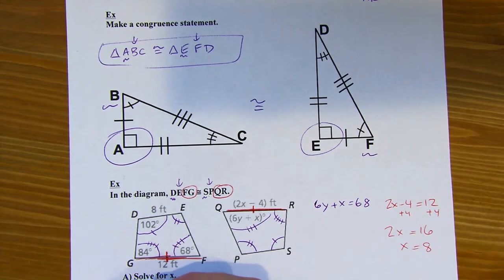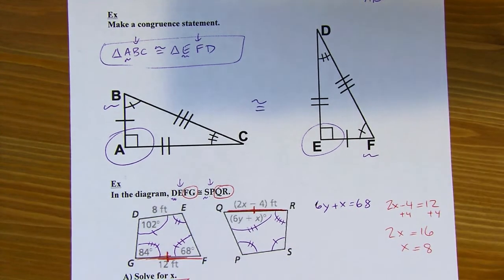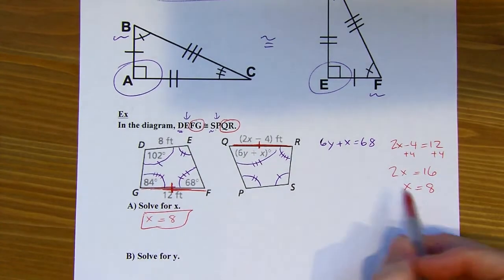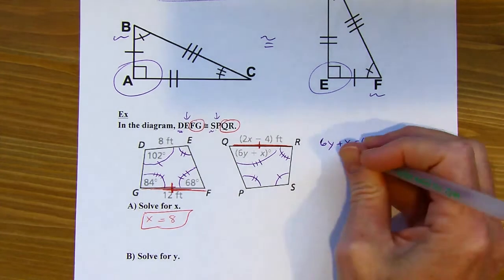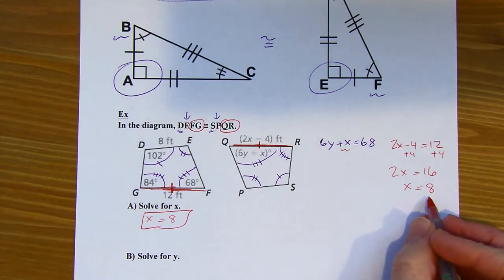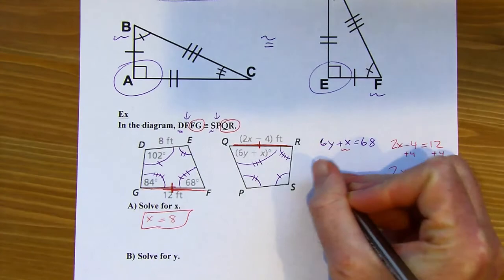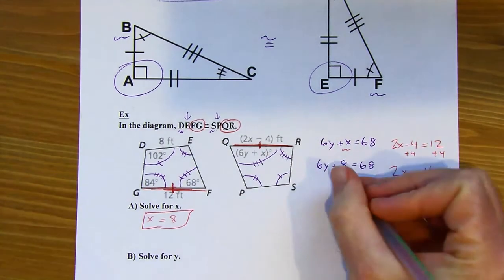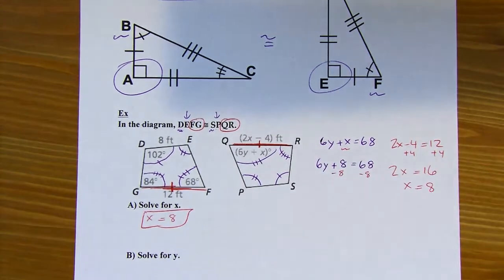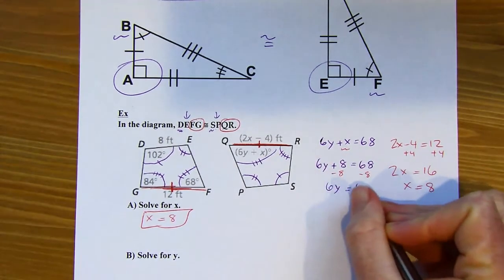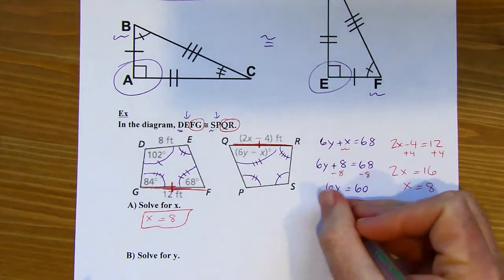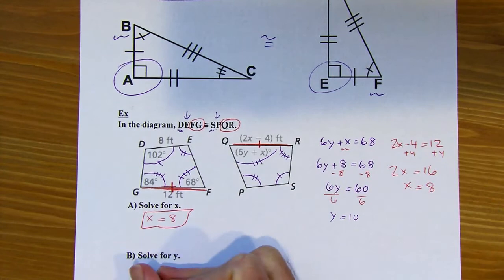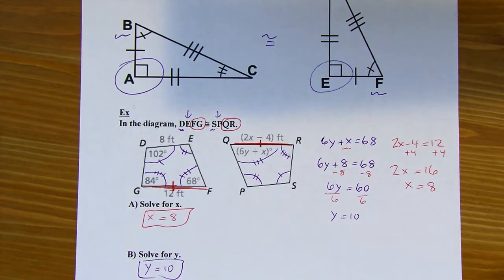Now I can solve for Y using the earlier equation 6Y + X = 68, substituting X = 8. I subtract 8 from both sides and then divide by 6, giving Y = 10. So X = 8 and Y = 10.